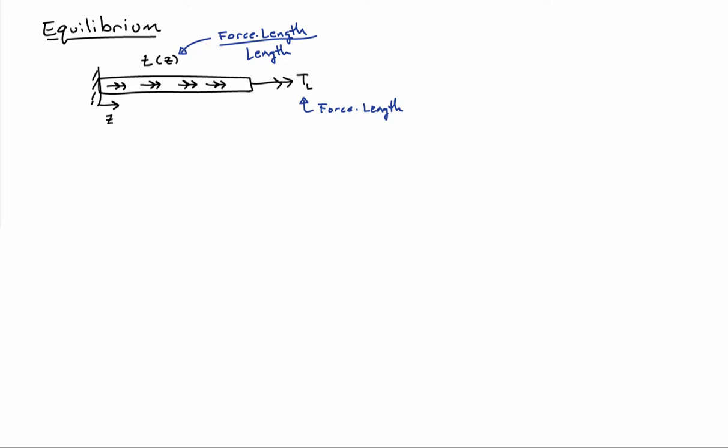So I'm going to consider a bar. It's going to be round. Actually, it doesn't matter right now, but we'll assume it's round. And it'll be subjected to a distributed body torque, this little t of z. So that's force times length, torque per unit length. So the units of little t are actually force. And maybe it's subjected to an end torque TL. So that's units of force times length.